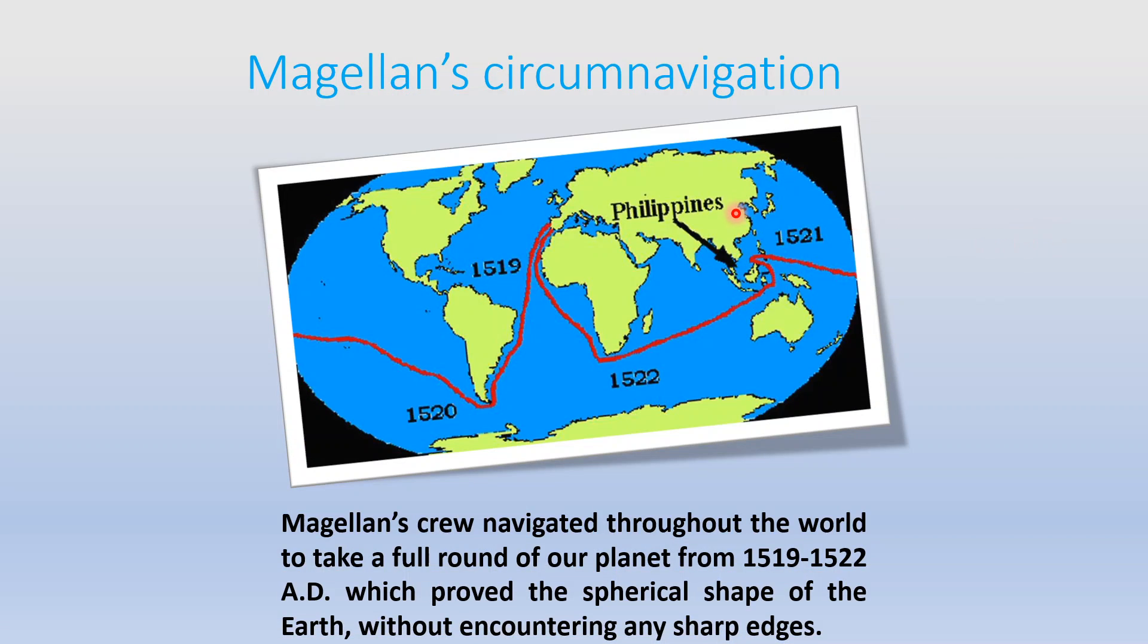Many years ago, in 1519, a very adventurous person, Ferdinand Magellan, navigated the entire Earth and reached the place from where he started. He started from Spain in 1519, went across South America, then to the Pacific Ocean. In 1521, he was near the Philippines, moved across the Indian Ocean, across the southernmost tip of Africa and returned to Spain.